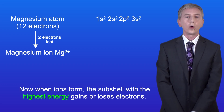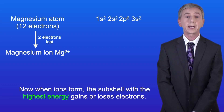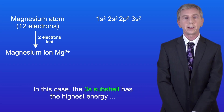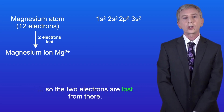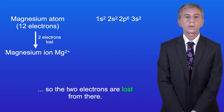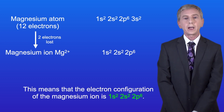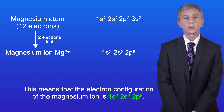When ions form, the subshell with the highest energy gains or loses electrons. In this case, the 3s subshell has the highest energy, so the two electrons are lost from there. This means that the electron configuration of the magnesium ion is 1s2, 2s2, 2p6.